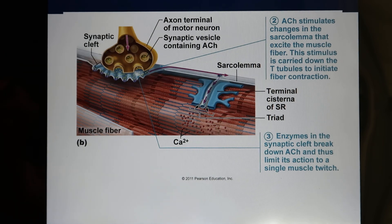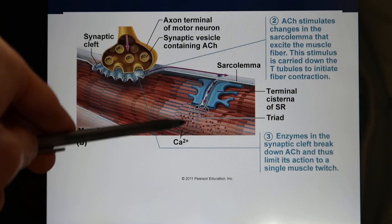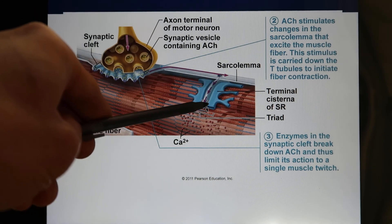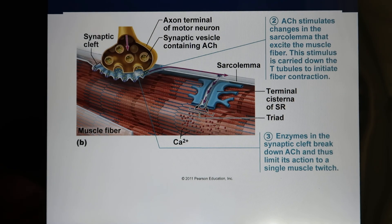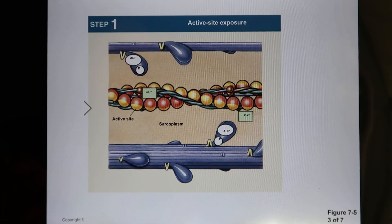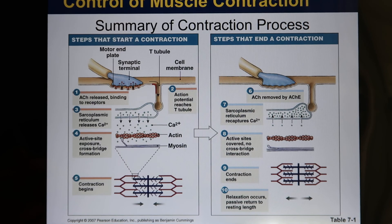Neurons release neurotransmitter and trigger an electrical signal in the muscle. The electrical signal goes through the T-tubule to every muscle fiber. The T-tubule connects with the terminal cisterna, which connects with the SR. The SR releases calcium. Calcium binds with troponin, tropomyosin moves away, and actin and myosin bind like two strong magnets — that's muscle contraction. That is the complete process of muscle contraction.